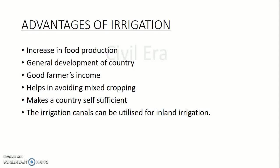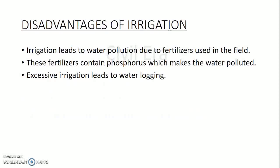The disadvantages of irrigation: we use fertilizers for increasing the fertility of fields, and these fertilizers contain phosphorous which can pollute the water. In this way, irrigation leads to water pollution. Excessive irrigation also leads to water logging. So these are the advantages as well as disadvantages of irrigation.